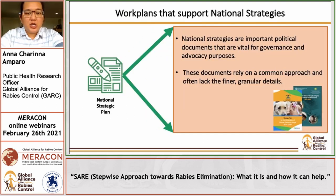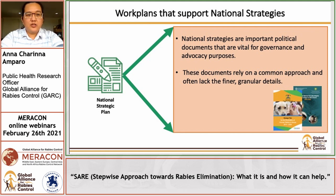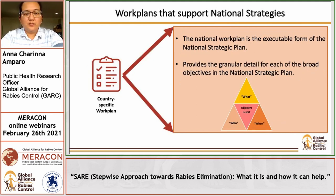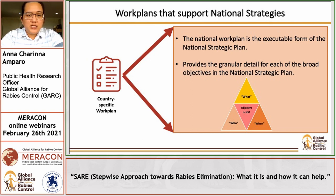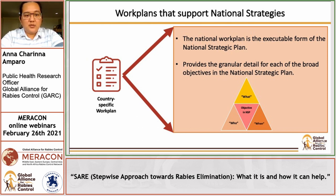Countries may or may not have their own national strategic plans. These national strategies are important political documents that are vital for governance and advocacy purposes. However, they rely on a common approach and often lack the finer granular details. The SARA will help to either develop a national strategy, or if your country already has one, it can help develop the work plan which is the actionable, executable part of the national strategy, providing granular detail for each of the broad objectives.